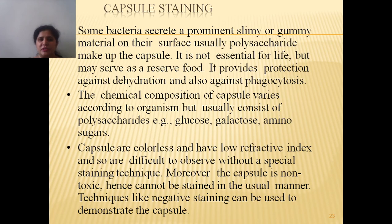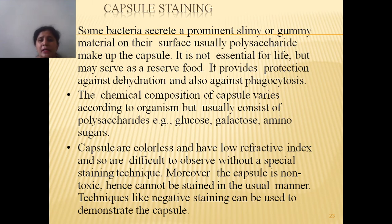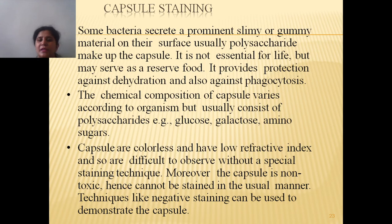The next type of differential staining is capsule staining. Some bacteria secrete a gummy material on their surface, usually made up of polysaccharide, which forms the capsule. Capsule is not essential for the life of bacteria, but it may serve as a reserve food source and provides protection against dehydration and also against phagocytosis. The chemical composition of the capsule varies according to the microorganism but usually consists of polysaccharides such as glucose, galactose, and amino sugars. These capsules are colorless with a low refractive index and are therefore difficult to observe without special staining techniques.